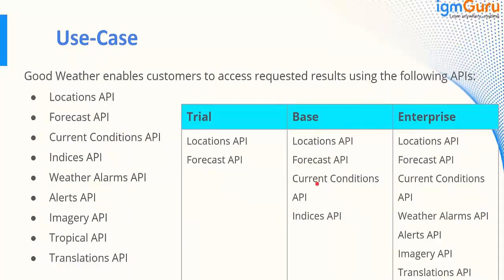The second requirement is around monetization. You have a company with many APIs and you want to monetize them. For free, only the location and forecast APIs are available. For a base subscription, five APIs are available. For an enterprise license, all APIs are available. For the trial version, you can call two APIs at only five requests per minute. On base, you can call 100 requests per minute on those five APIs. On enterprise, you can call unlimited — there's no cap.